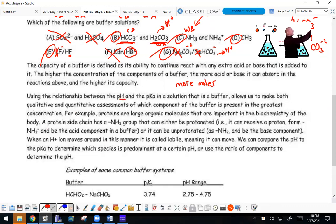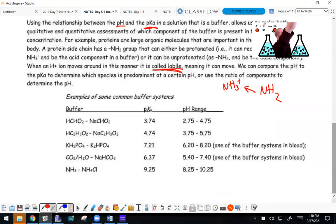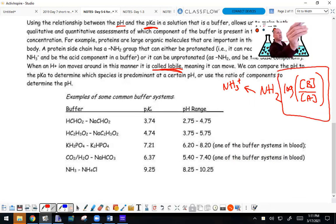Using the relationship between pH and pKa - the negative log of Ka - allows us to make qualitative and quantitative assessments. For example, proteins have an NH2 group which can be protonated to become NH3+. When we compare pH to pKa to determine which species is predominant, we use the ratio of components. Going back to the Henderson-Hasselbalch equation, this ratio is the key to understanding it.